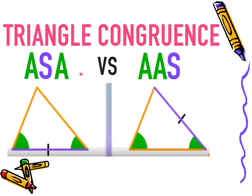Now let us take a closer look at the difference between ASA and AAS. In ASA, between two angles there is an included side — the S stands for included side. Whereas in AAS congruence, the S stands for non-included side, meaning it is not included between the two angles.